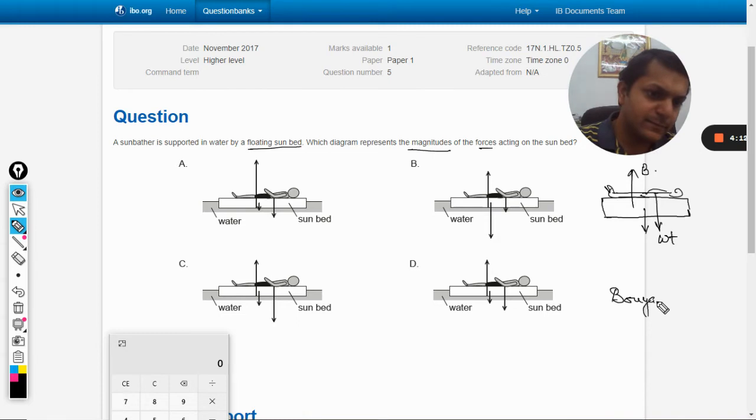Buoyant force is the force that is acting on the body by the fluid in the upward direction. This is the upthrust due to which the bodies do not sink into the water. So these are the three forces.